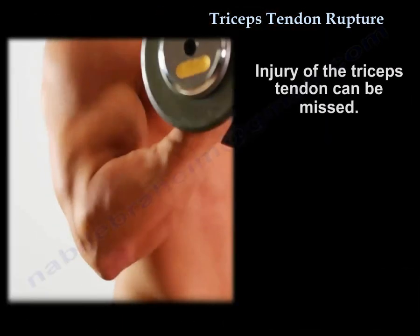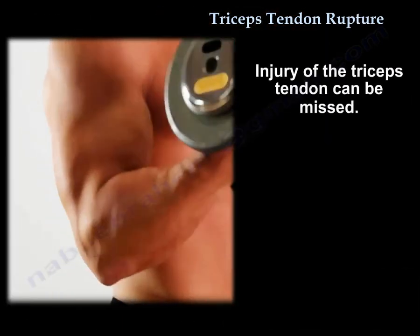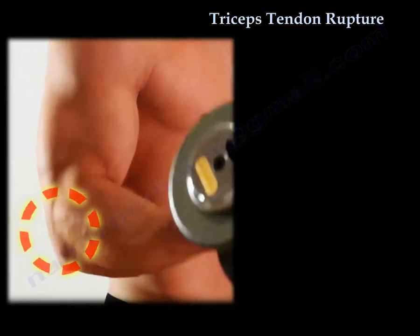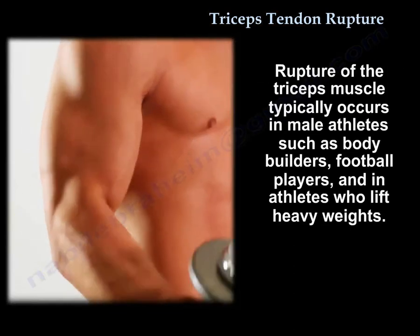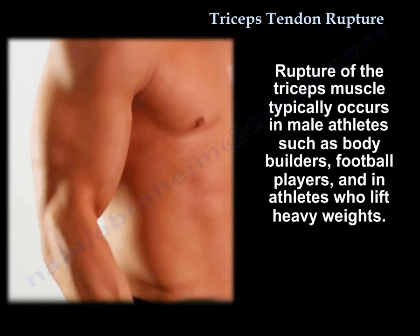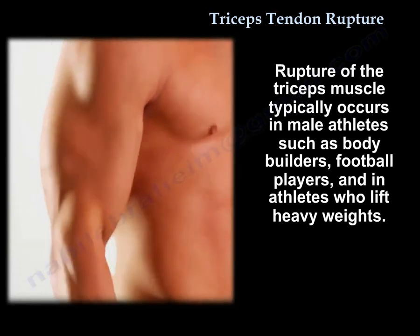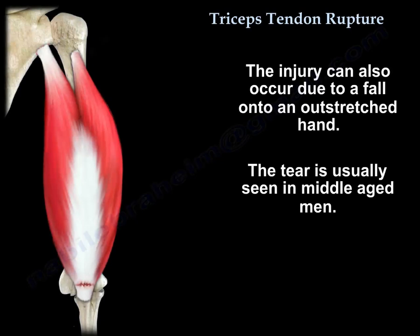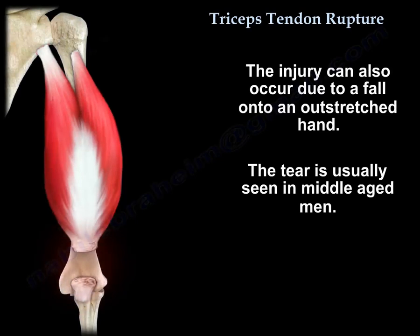Injury of the triceps tendon can be missed. Rupture of the triceps muscle typically occurs in male athletes, such as bodybuilders, football players, and athletes who lift heavy weights. The injury can also occur from a fall on the outstretched hand. The tear is usually seen in middle-aged men.